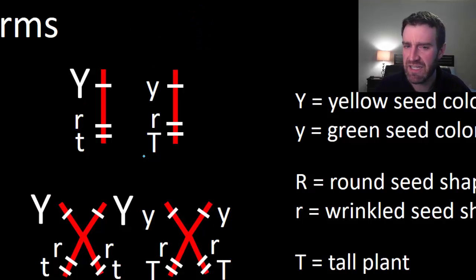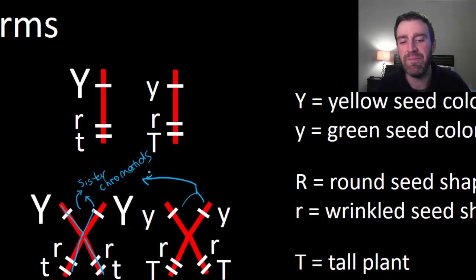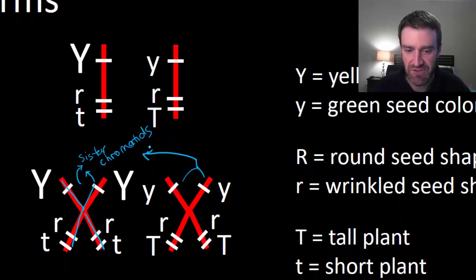When we see the X's, those are not homologous pairs - those are sister chromatids to each other. So sister chromatids are tied together. These are also sister chromatids to each other and they are tied together. And barring mutation, which is rare, they should be identical to each other.